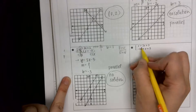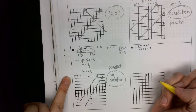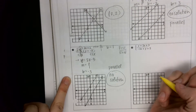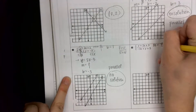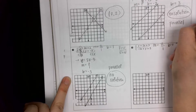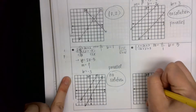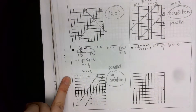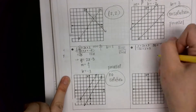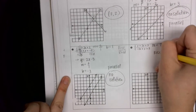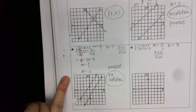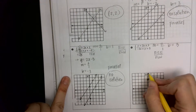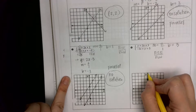Number four. Is this top one in y equals mx plus b form? Yes. So what's my m? Two. My b is three. One, two, three — there's my y-intercept. To do rise over run, do I go up or down for positive two? Up two. My denominator is positive one, so I go to the right.